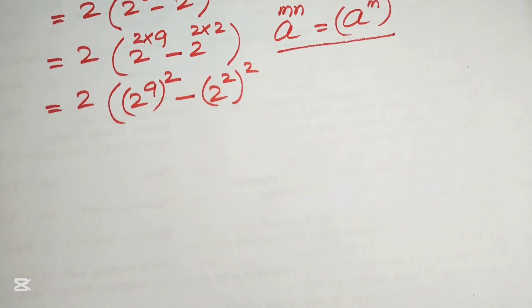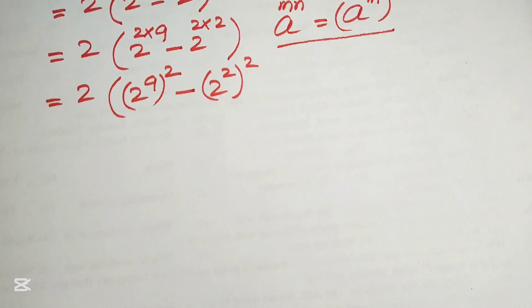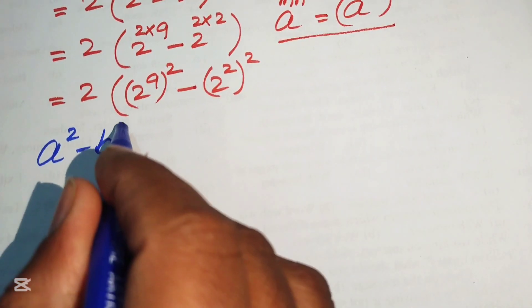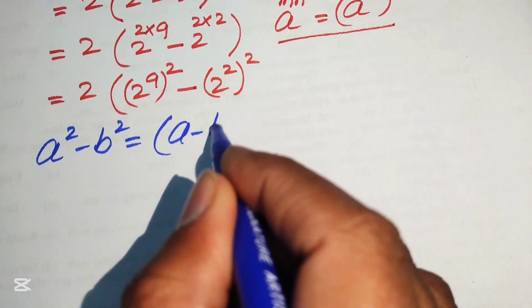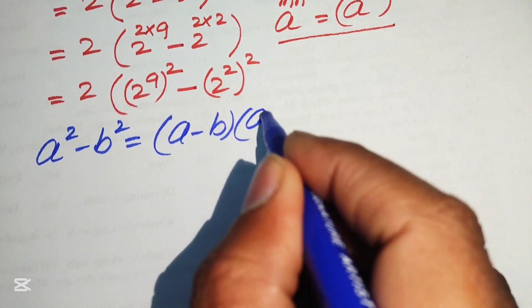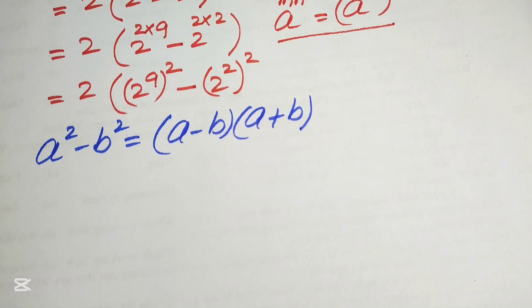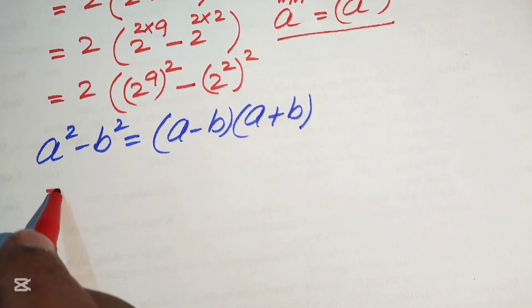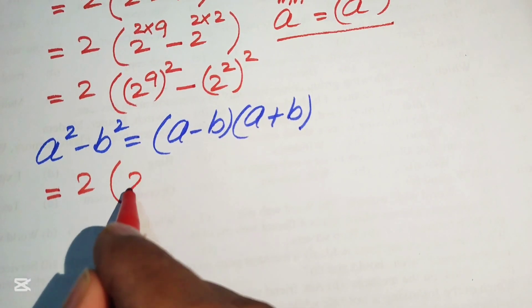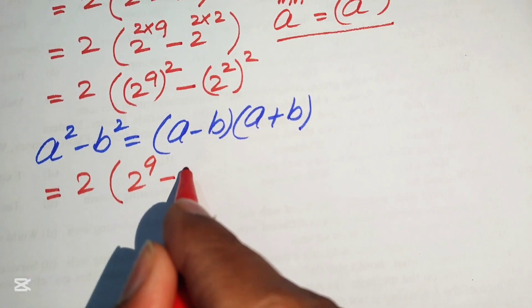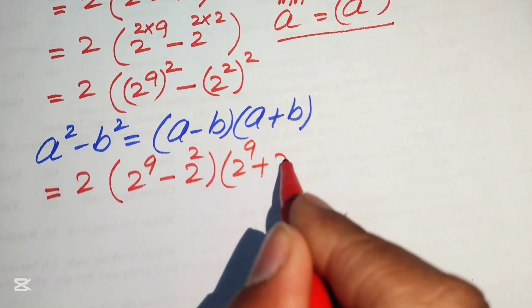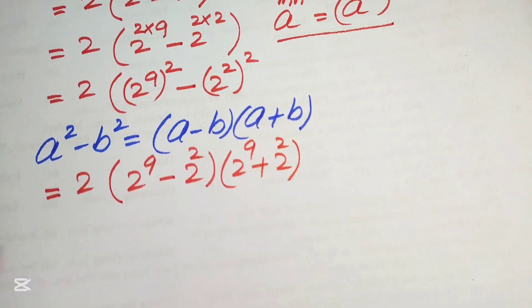Further, we need the nice algebraic formula. You know that if we have a squared minus b squared it equals a minus b times a plus b. So we apply this algebraic formula and our term is written as 2 to the power of 9 minus 2 squared, times 2 to the power of 9 plus 2 squared.